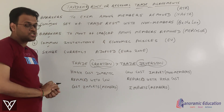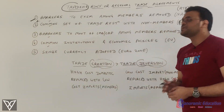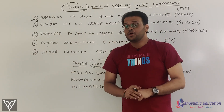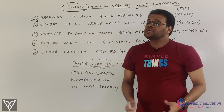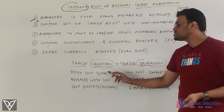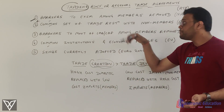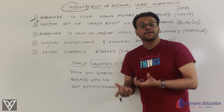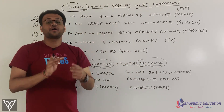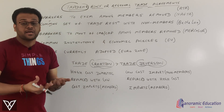Trade creation means that when you enter into such agreements, things that were previously produced domestically at high cost can now be imported from member countries without restrictions. So high-cost domestic production is replaced with low-cost imports from member countries of your trading block — that is an advantage, driven by specialization.